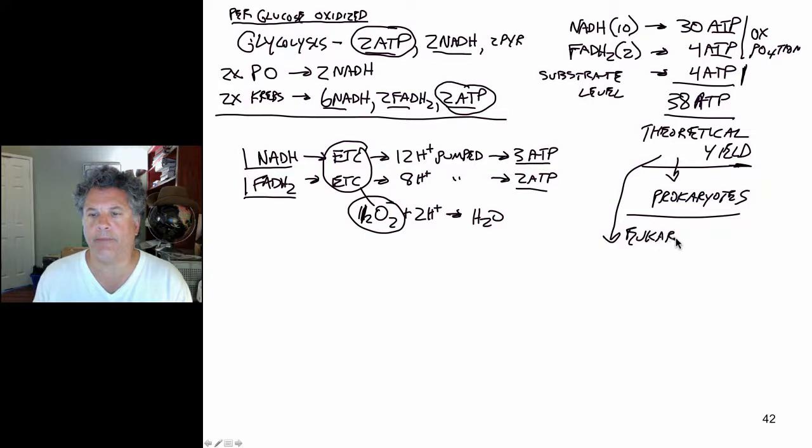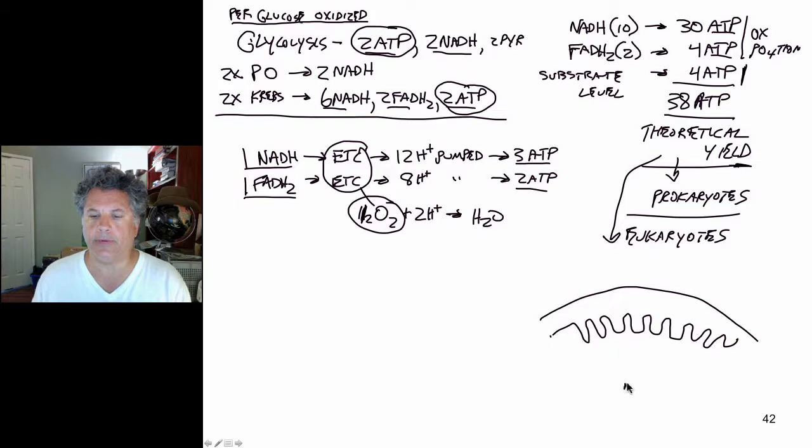The reason for that is, let's consider where all this is taking place. If this is the mitochondrion, here's the inner mitochondrial membrane that I'm drawing now, and the matrix of the mitochondrion is here and the cytoplasm of a eukaryote is here.